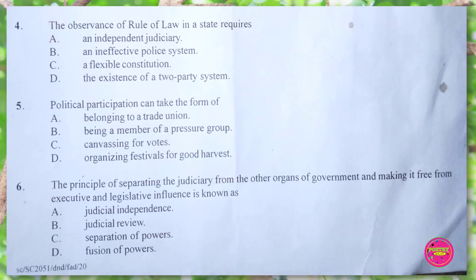Question 4. The observance of rule of law in a state requires: A. an independent judiciary, B. an ineffective police system, C. a flexible constitution, D. the existence of a two-party system. The correct answer is A. an independent judiciary.